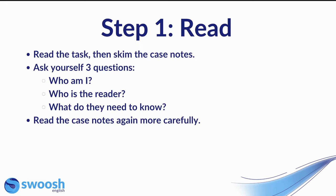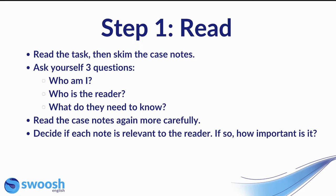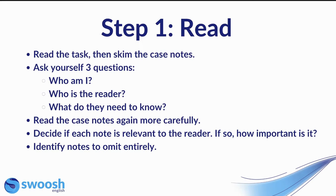These questions are going to help you select the information to include in your letter. Then you can read the case notes again, this time more carefully. As you're reading them the second time, decide if each note is relevant to the reader and, if so, how important it is. At this stage you're deciding which case notes to include and how important each note is, as this will help you later when you decide the order to present the information. Finally, you can identify notes to omit entirely, as you won't include every single case note in your OET letter.